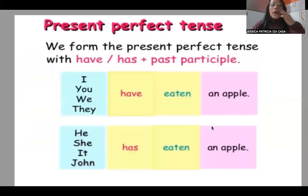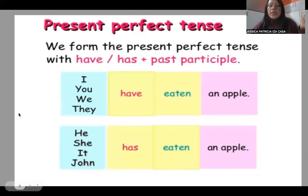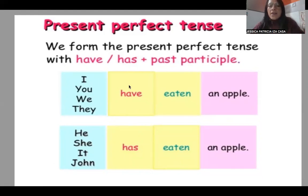Now, what is the structure of the present perfect? You have to recognize the order of the sentence. First, you have the subject — you can use personal pronouns: I, you, he, she, it, we, they — or nouns and names like 'my cat,' 'my dog,' 'Susana.' Then you use the auxiliary: 'has' with he, she, it — the third person singular — and 'have' with I, you, we, they.